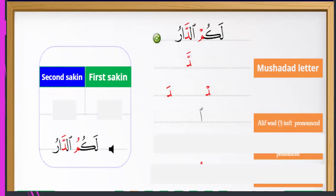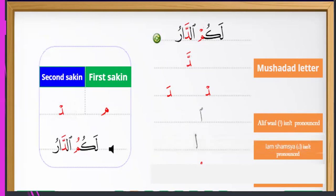It is 'lakumut,' not 'lakum,' then add 'dar.' The lam shamsiya is not pronounced. It is 'lakumut,' not 'lakum add.'